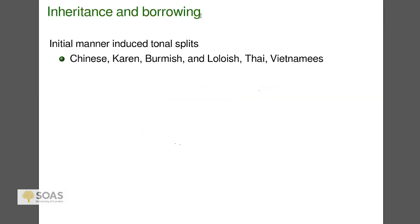For example: initial-manner-induced tonal splits occurred around the same time in Chinese, Karen, Burmish, Loloish, Thai, and Vietnamese. For Thai and Vietnamese, it's contact-induced because they're not even related languages. But the question arises: when Burmish and Loloish underwent a similar tone split, is it one event because Lolo-Burmese was still one language, or is it through contact? That kind of thing has yet to be well worked out.